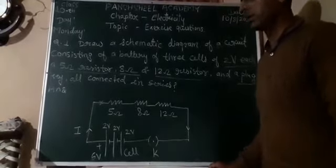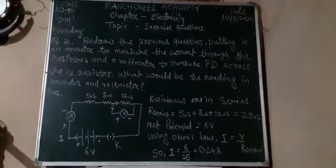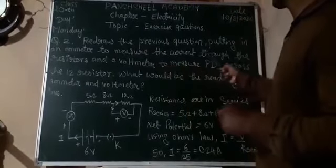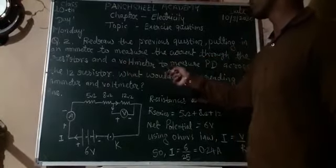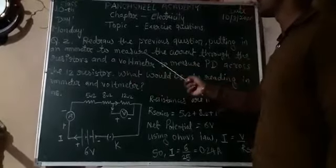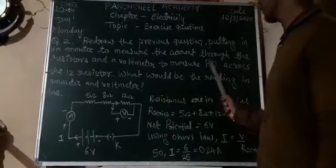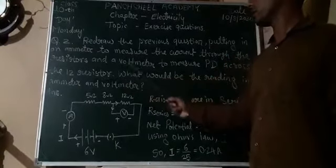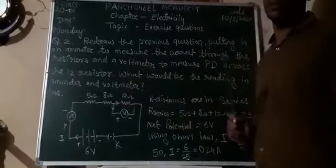The next question says: redraw the previous circuit putting in an ammeter to measure the current through the resistors, and a voltmeter to measure the potential difference across the 12 ohm resistor. What would be the reading on the ammeter and voltmeter?